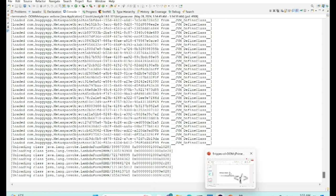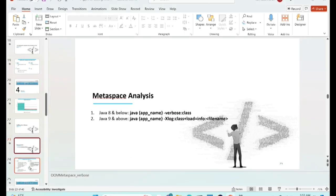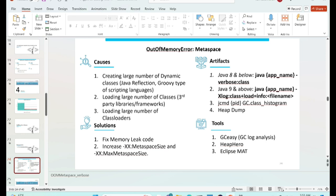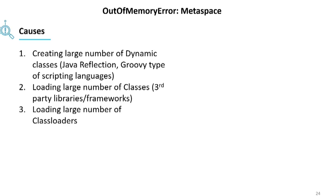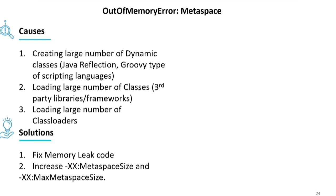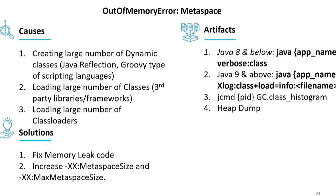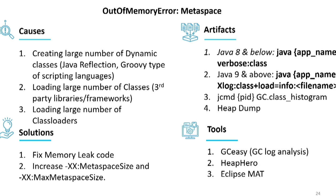Quick recap: what causes this out-of-memory error metaspace? Loading a lot of dynamic classes or a lot of third-party libraries. Fix the memory leak in metaspace or increase your metaspace size. Enable verbose class logging to see what is being loaded, and use heap dump analysis tools.